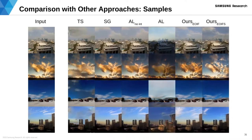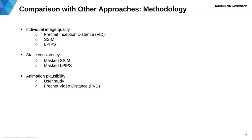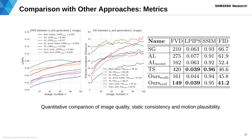Here you can see videos obtained by different models, including ours. We conducted quantitative and qualitative evaluation in three aspects: quality of individual frames, consistency of static details, and overall video plausibility. Our method achieves the smallest value of FID and perceptual similarity, indicating superior individual image quality and static consistency. Note that metrics of our method degrade with time not as fast as metrics of Animating Landscape.